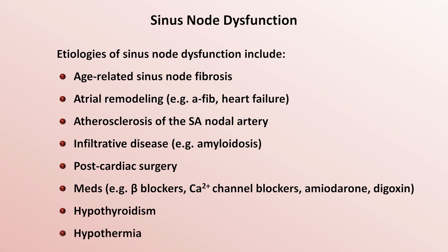The first several of these tend to be irreversible, such as heart failure, AFib, and certainly age-related fibrosis, but the last several tend to be reversible, such as hypothyroidism, hypothermia, and drug toxicity. If you correct those underlying problems, the sinus node dysfunction goes away.